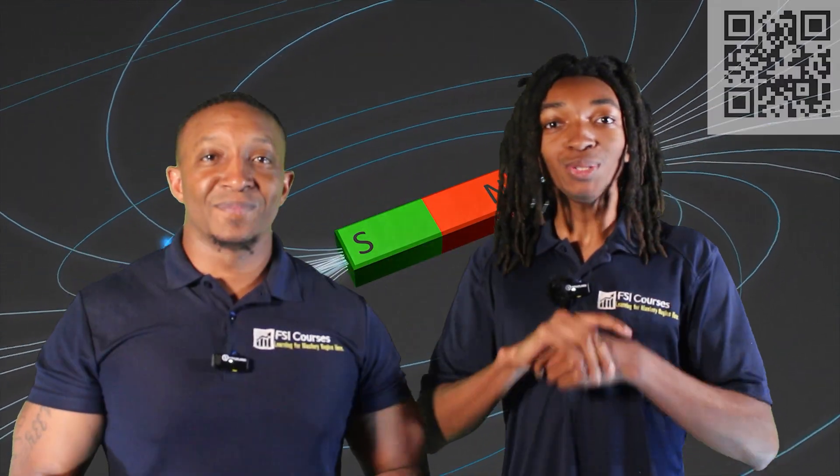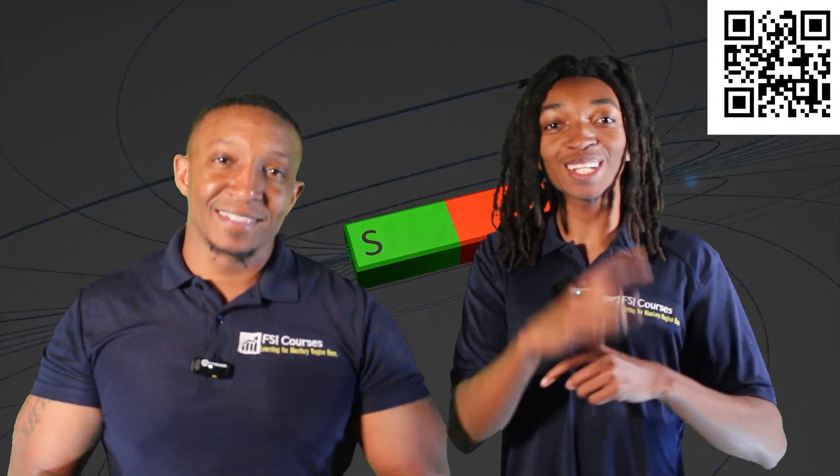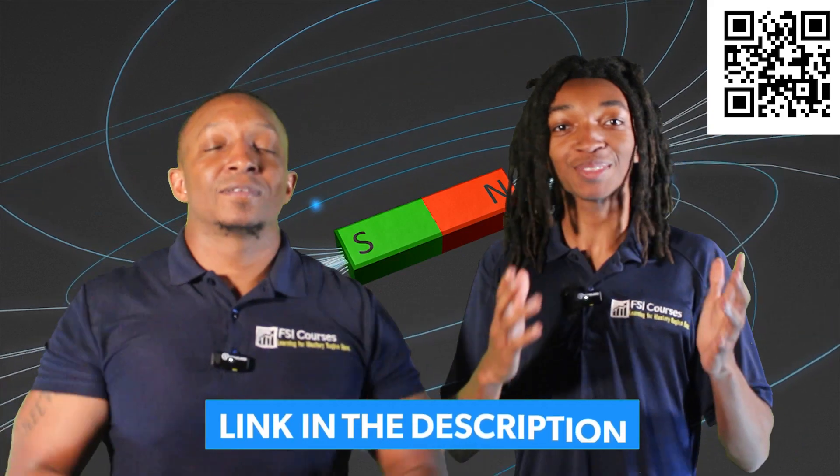And that's our video for today. Now let's test your knowledge to see how proficient you are with describing and explaining differences in function and purpose of permanent magnets and electromagnets by taking our video quiz. Use your electronic device to scan the QR code at the top right of the screen, or you can click the link in the description box below the video to take the quiz.